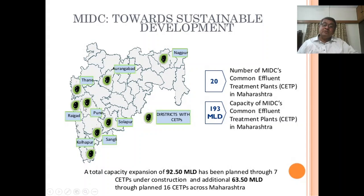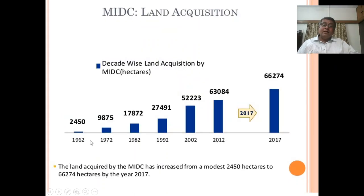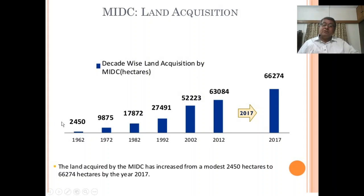Districts with CTPs include Thane, Aurangabad, Nagpur, Raigad, Pune, Solapur, Sangli, and Kolhapur. Now let's see land acquisition of MIDC decade-wise. In 1962 MIDC had about 2,450 hectares of land.